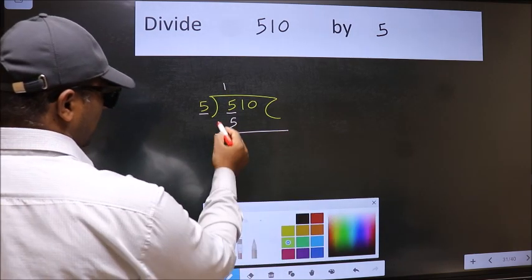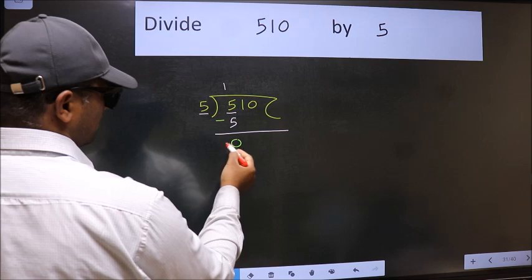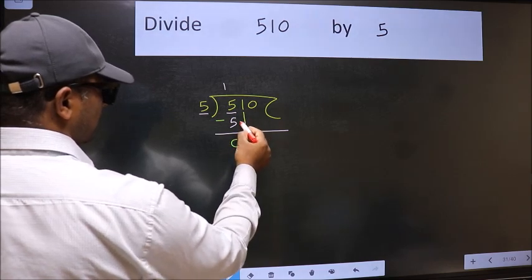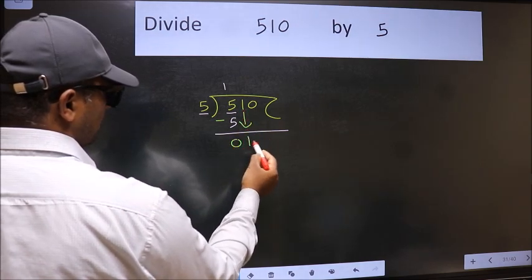Now we should subtract. We get 0. After this, bring down the beside number. So 1 down.